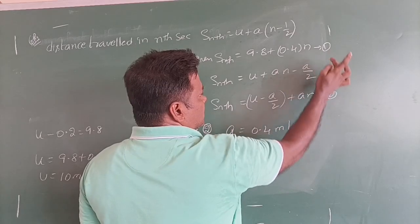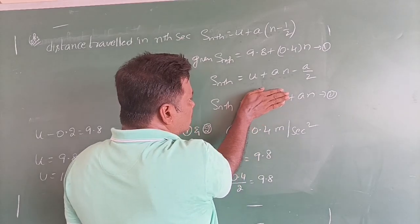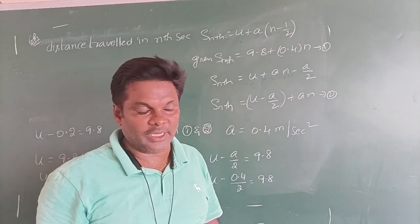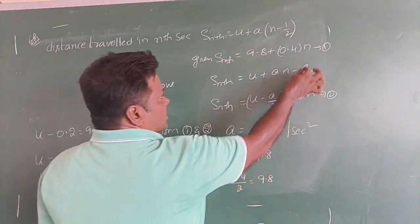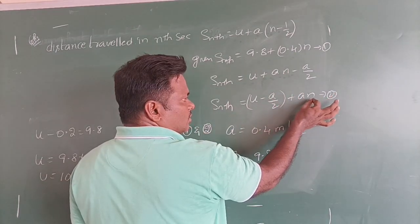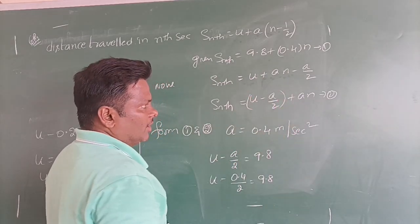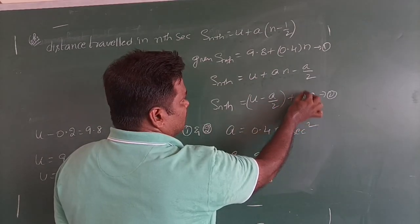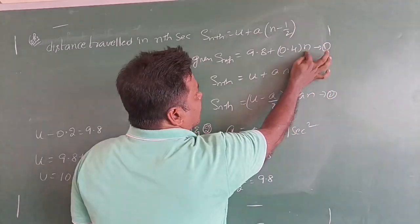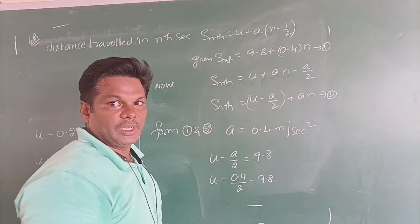Comparing equation 1 and equation 2: the coefficient of n in equation 1 is 0.4, and in equation 2 the coefficient of n is A. So A = 0.4 m/s². We got acceleration. The whole constant term 9.8 corresponds to (U − A/2) in equation 2.